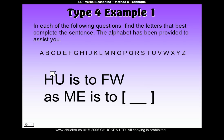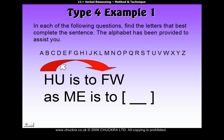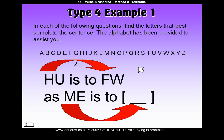Just as in some of the previous types of questions, you look at the first letter of this pair and how it gets to the first letter of the second pair. So H to F — if you go backwards 2, you get to F. So we can put a little minus 2. Then you find out what M would change to by going backwards 2. M backwards 2 is K. So the first letter of the answer should be K.